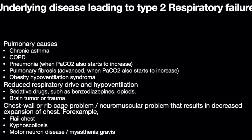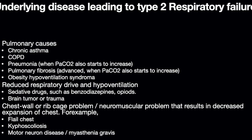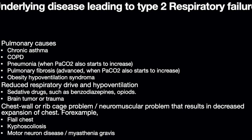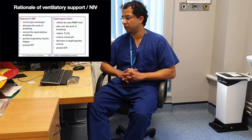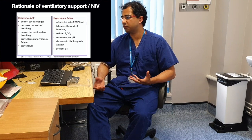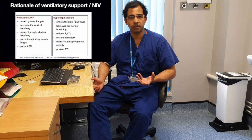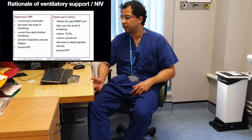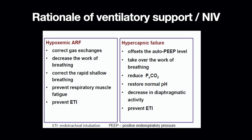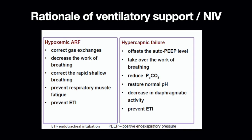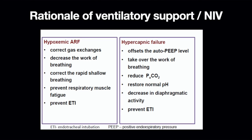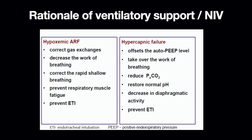For example, somebody who has an excess amount of morphine can have type 2 respiratory failure. Let's talk about the rationale of ventilatory support in respiratory failure. In regard to type 1 respiratory failure, ventilatory support helps correct the gas exchange, decreases the work of breathing, corrects the rapid shallow breathing, prevents respiratory muscle fatigue from setting in, and reduces the need for intubation if you correct the hypoxia early.